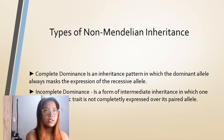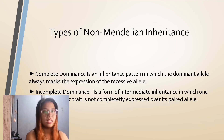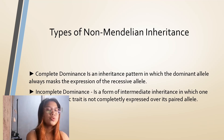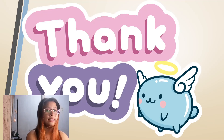Types of non-Mendelian inheritance. Complete dominance is an inheritance pattern in which the dominant allele always masks the expression of the recessive allele. Incomplete dominance is a form of intermediate inheritance in which one allele for a specific trait is not completely expressed over its paired allele. That's it.